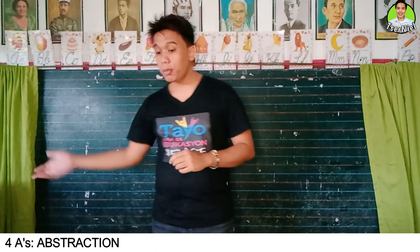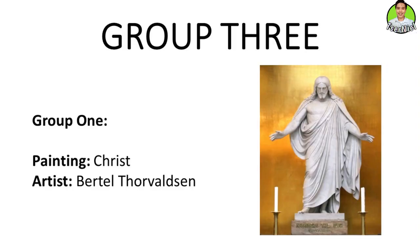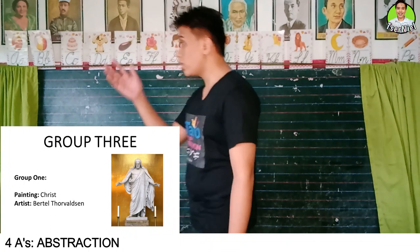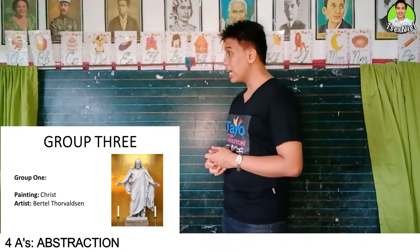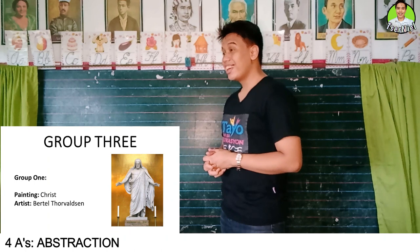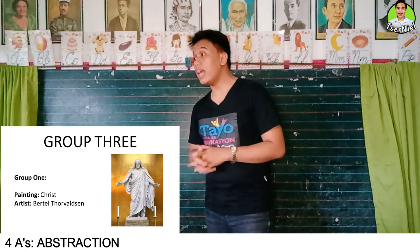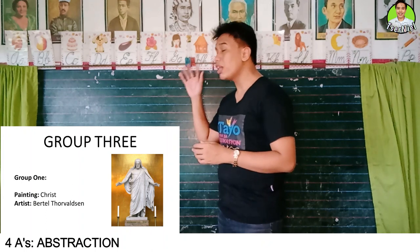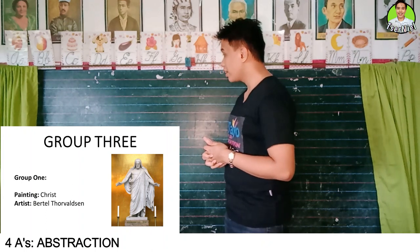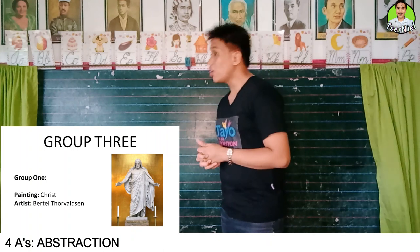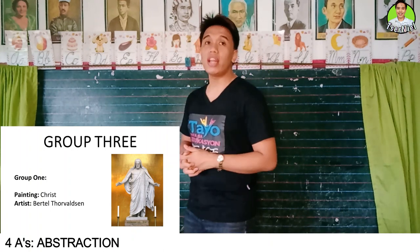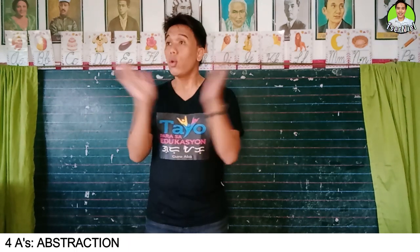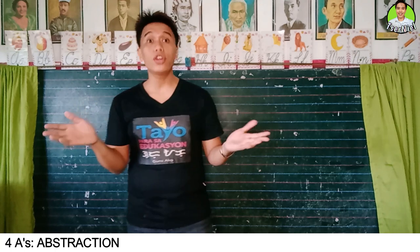Let's proceed with group three. For group three, I assigned a sculpture to them. The sculpture is 'Christ' by Bertel Thorvaldsen. Group three, what did you notice about the line style? It is very visible and evident. Now what about the texture? It is also very smooth. Very good. Let us give group three three claps — one, two, three. Congratulations to all groups, you all did well.